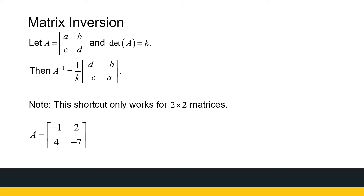Now if I've got a two by two matrix, finding the inverse has a nice shortcut. Just for a two by two, let's look at the shortcut because it's quite easy to use. If I've got a two by two matrix with determinant value K, then the inverse is one over K times a modified matrix — I swap the places of A and D in the original matrix and change the signs of B and C. That's how I get my inverse of a two by two matrix.